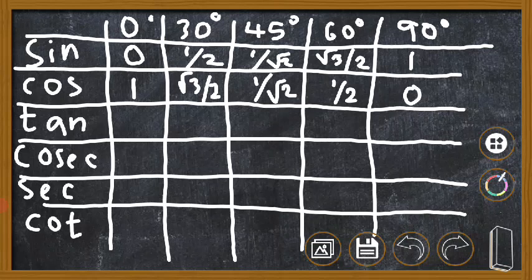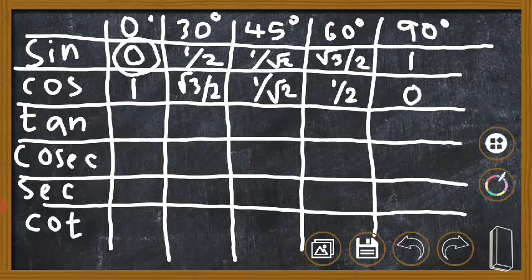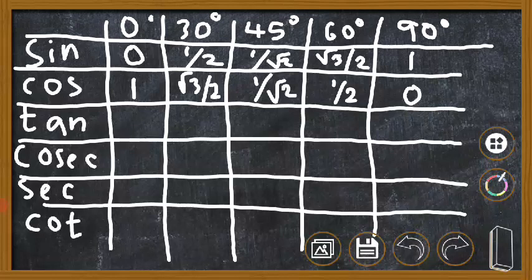Next, we have to find the values of tan. We know that tan theta equals sin theta divided by cos theta. So tan 0 equals sin 0 divided by cos 0, which is 0/1, and the answer is 0.